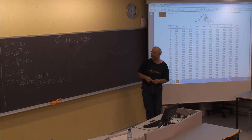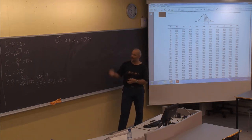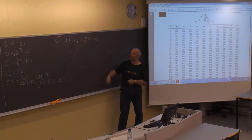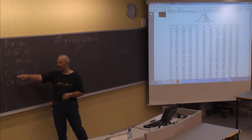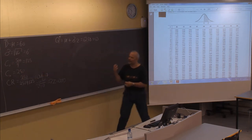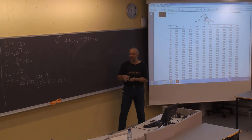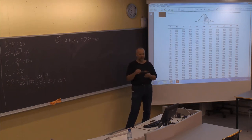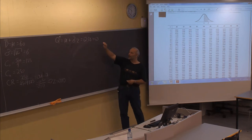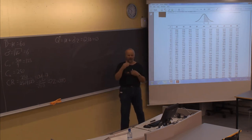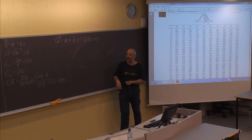Since we do not sell 0.58 of a car, this must be rounded. With a larger underage cost than overage cost, we round up. The optimal Q is therefore 63 cars, ordered every three months. If demand exceeds this, an emergency order can be placed at a cost of $250.